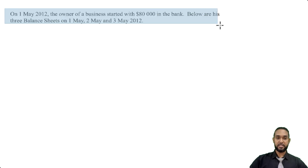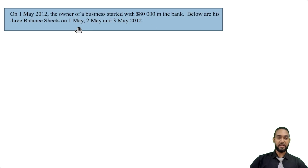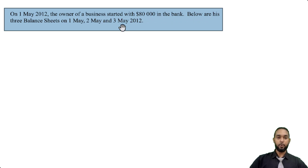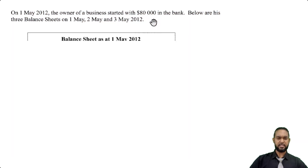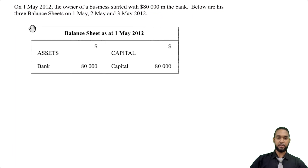So of course, we're going to take a read of the information first. It says on 1 May 2012, the owner of a business started with $80,000 in the bank. Below are his three balance sheets on 1 May, 2nd May, and the 3rd of May. Let's take a look at these balance sheets.